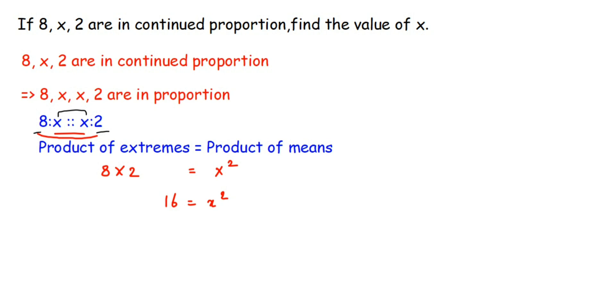Here we have to find the value of x but we have x square, which means we have to take a square root on both sides because square and square root are opposite. The square root of 16 is equal to x square and here we will take a square root.